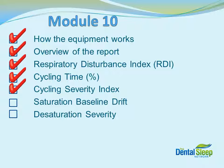So we've looked at three components: respiratory disturbance index, cycling time, and the cycling severity index. All of these are important to look at, and if any of these are occurring within the red section of the graph, then we know that your patient is definitely at risk. If they are red in two or more areas, then we have a serious sleep apnea risk. The next two graphs are used to help you determine if there are potentially other problems with the patient not necessarily related to sleep apnea.